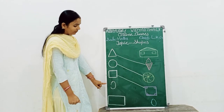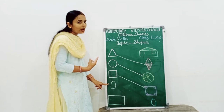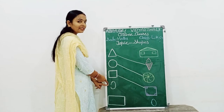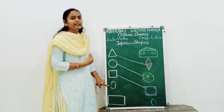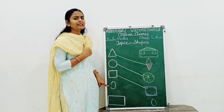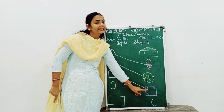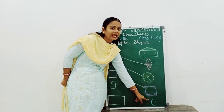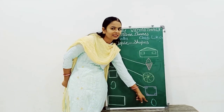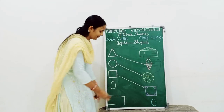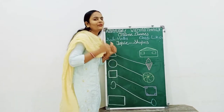Which shape is this? Oval. Tell me, student — which figure is similar to oval? Yes, egg is similar to oval. Let's match. Very good.